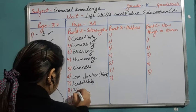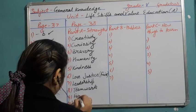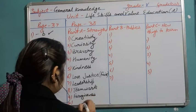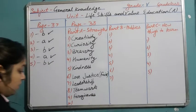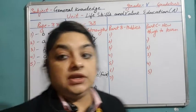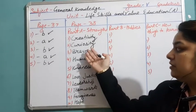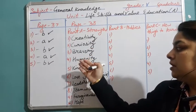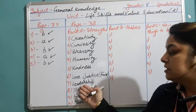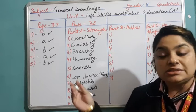You can also write leadership qualities. Teamwork is another great strength — it's very difficult to do, so if you can do it easily that is definitely your strength. Being hopeful and staying positive is also a very good quality. So examples include: creativity, curiosity, bravery, humanity, kindness, fairness, love of justice, leadership, teamwork, forgiveness, and hope. You can write more on the basis of your own choice.